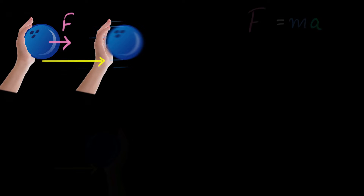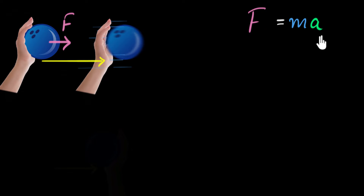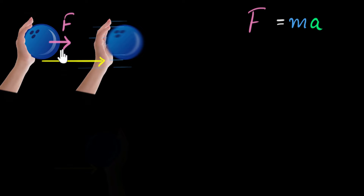This is in accordance with Newton's second law, which says F = ma, meaning force will accelerate a body. Of course, if there are more than one force, we have to calculate the net force, but we'll talk about that later. For now, let's consider only one force — you're putting a force, and that accelerates the body. That's one way to think about it.